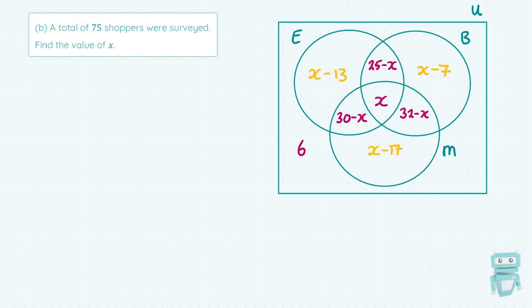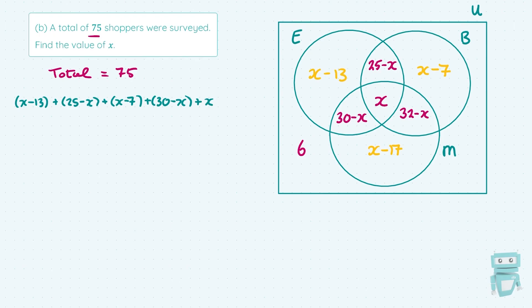In part B, a total of 75 shoppers were surveyed — find the value of X. The entire universal set must add up to 75. So we add every single part of the Venn diagram and set it equal to 75: (X minus 13) plus (25 minus X) plus (X minus 7) plus (30 minus X) plus X plus (32 minus X) plus (X minus 17) plus 6 equals 75.